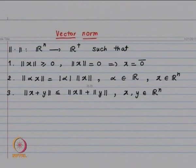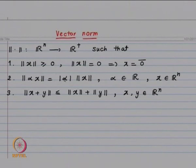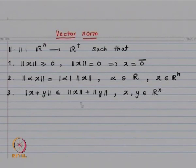The second condition: for alpha a real number, norm(αx) should equal |α| times norm(x), valid for all α in R and all vectors x in Rⁿ. The third condition is the triangle inequality: norm(x + y) ≤ norm(x) + norm(y). Vector addition is component-wise, so x + y has components x₁+y₁, x₂+y₂, ..., xₙ+yₙ, and scalar multiplication αx has components αx₁, αx₂, ..., αxₙ.